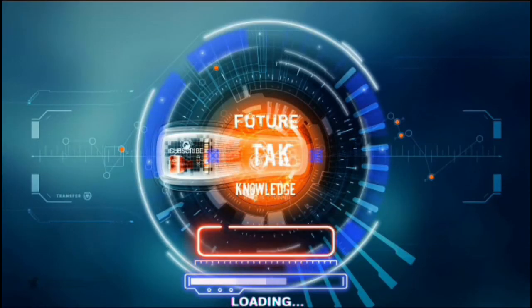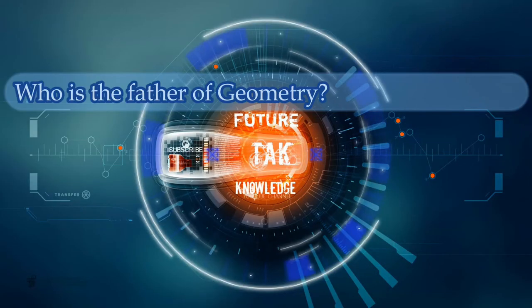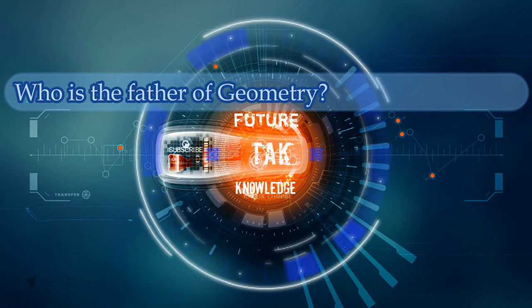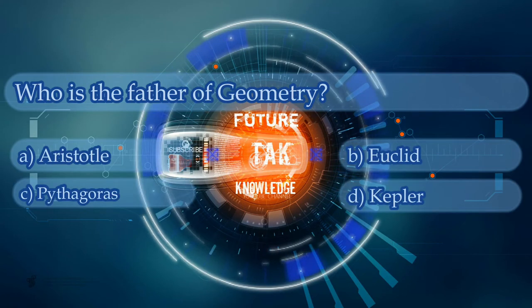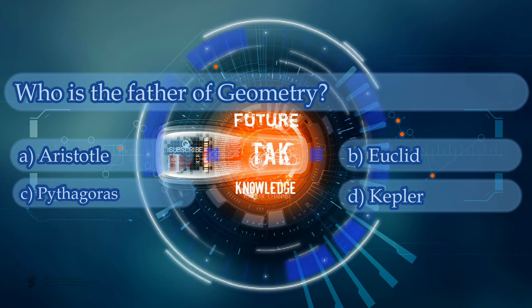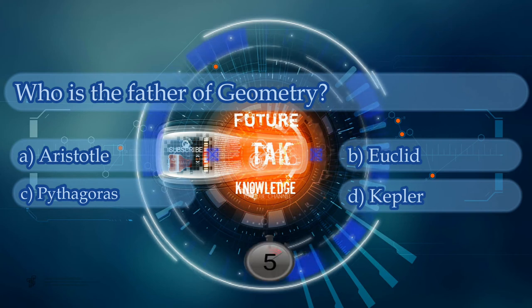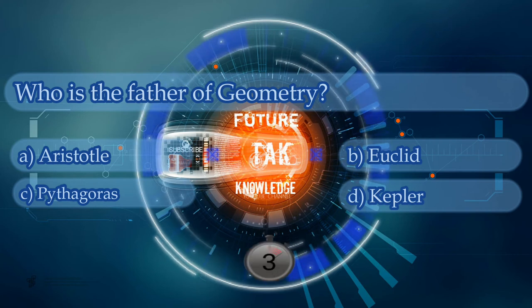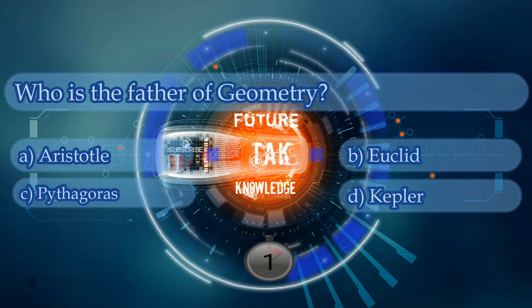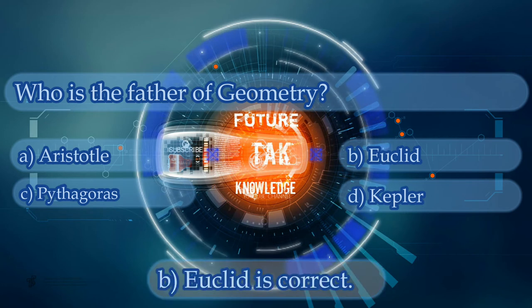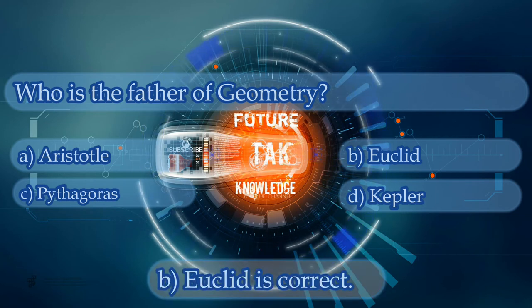Who is the father of geometry? Option A: Aristotle. Option B: Euclid. Option C: Pythagoras. Option D: Kepler. Option B is correct.